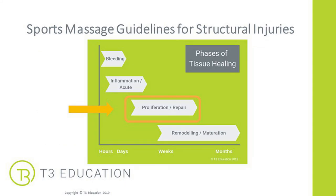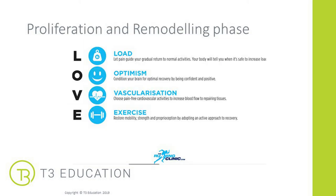Moving into the proliferation and remodelling phase, focus on the LOVE part of the PEACE and LOVE acronym. This phase is about encouraging movement: load the tissues, be positive and optimistic when talking to your client about the injury, encourage exercises that create vascularisation to increase blood flow to aid repairing tissues, and use strength and conditioning and proprioception exercises. If you aren't qualified to create a detailed exercise programme, work with somebody else who can help your client move and feel better more quickly.